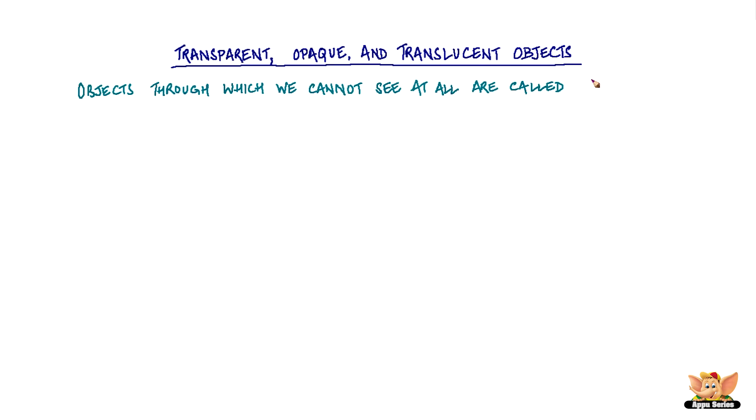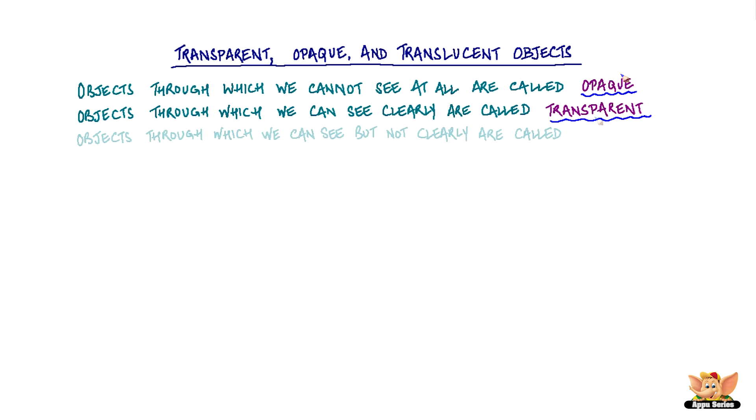Objects through which we cannot see at all are called opaque. Objects through which we can see clearly are called transparent. This means that they allow light to pass through them. And objects through which we can see but not clearly are called translucent.